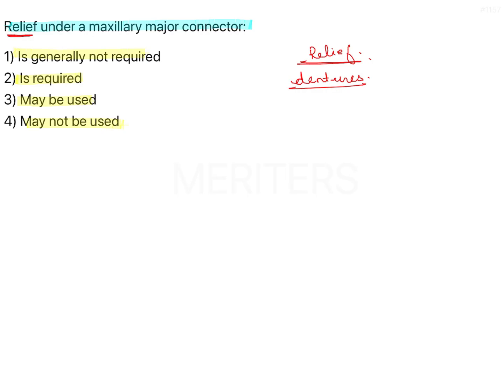For example, we know incisive papilla is a relief area in complete denture. Where incisive papilla is located on the ridge, you will keep the denture a little away from contact from the incisive papilla. Everywhere else it will be in intimate contact.